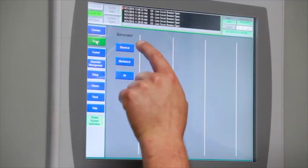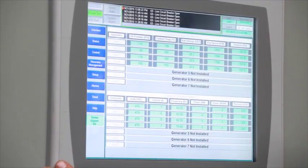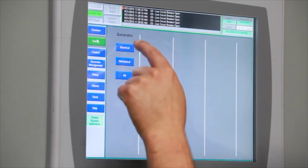Paralleling controls provide the operator with an overview of the system, status of generators, electrical and mechanical information, oil pressure and coolant temperature, engine speed, and all outputs for each individual unit.